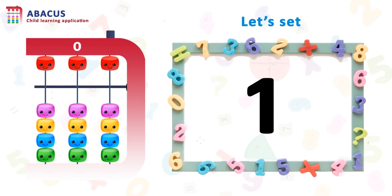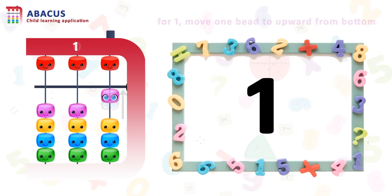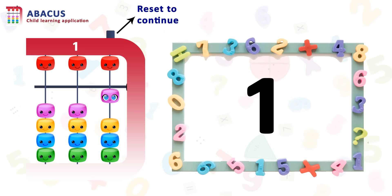Here we have the number 1. So let's set 1. For 1, we have to move 1 bead upward from the bottom on rod 1. To go to the next example, we have to reset the Abacus by pressing the top right button. So let's reset and continue.